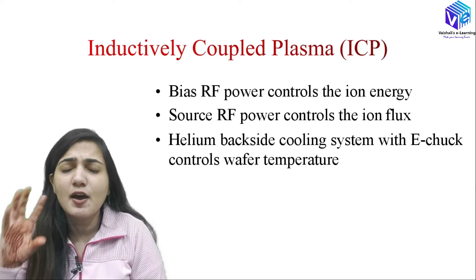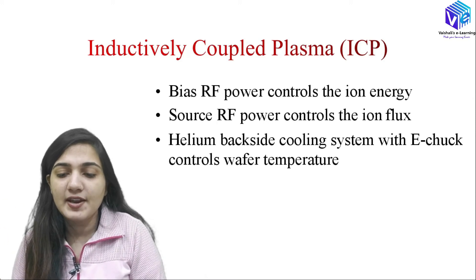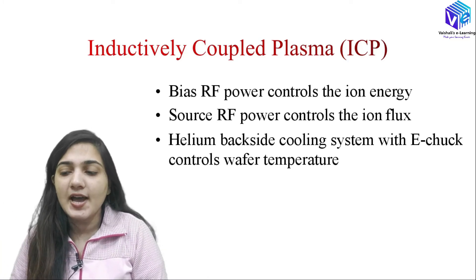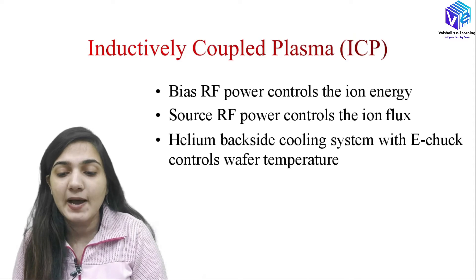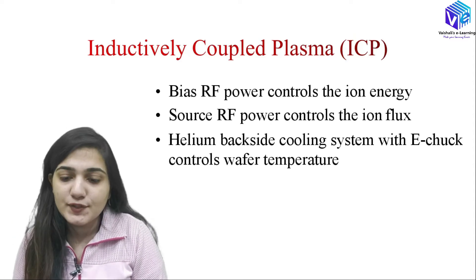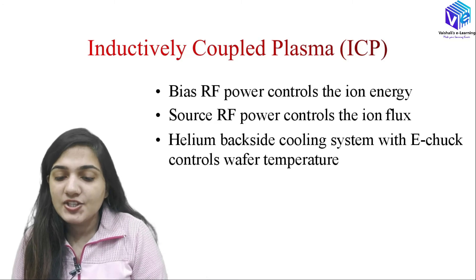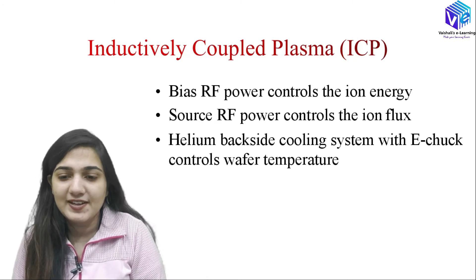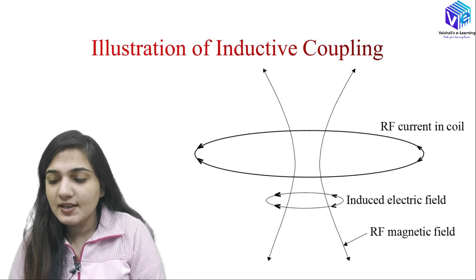The bias RF power controls the ion energy — the RF power knob is the most important control for ion energy. We also have the source RF power which controls the ion flux. So both ion energy and ion flux can be controlled with the bias RF power and source RF power. A helium backside cooling system with the electrostatic chuck controls the wafer temperature.